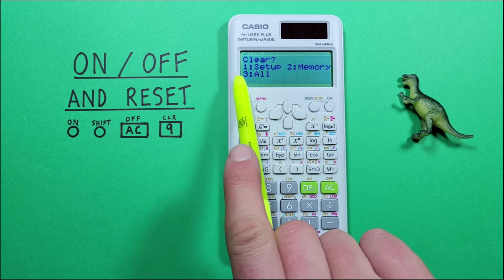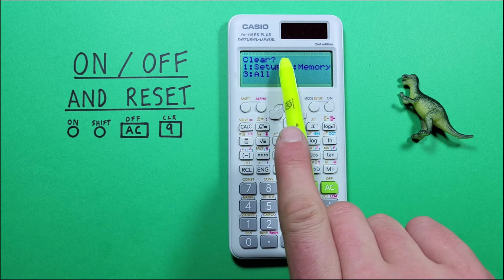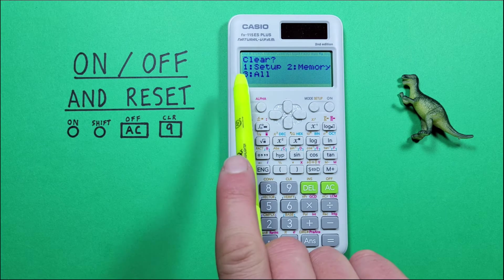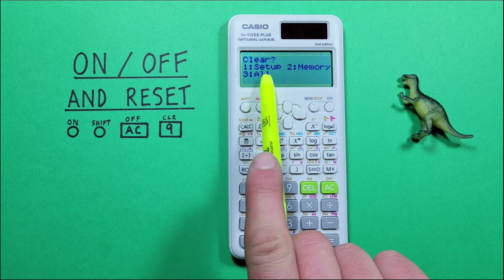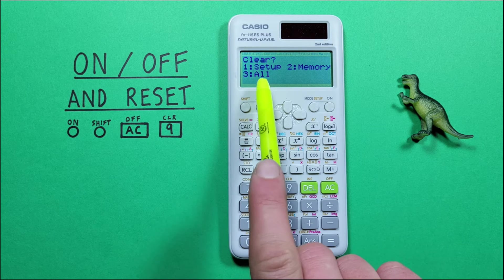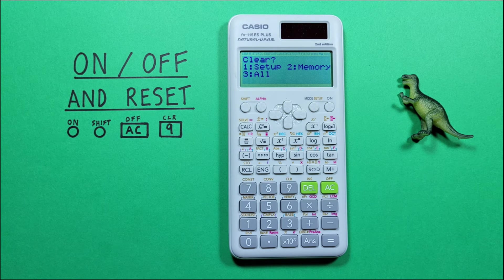This brings us to this menu here, where it says CLEAR? We have number 1, SETUP, which shows things like if we're set to RADIANS mode, it will take us back to our original mode, which is Degrees.